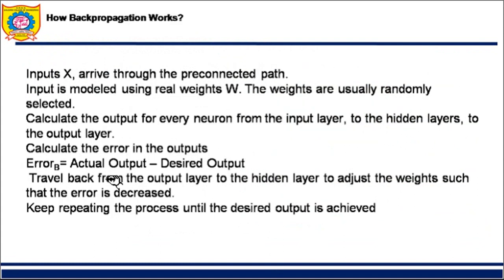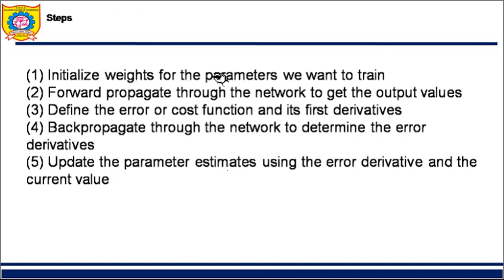We can see how to calculate the error: it is the actual output minus the desired output. This is the output I got and this is the output I expected. I have to travel back in order to do this. The algorithm is what I have just explained, and now I will read it in short.